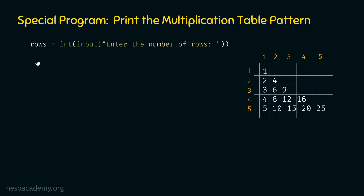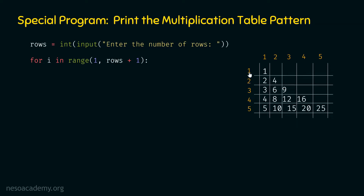We need nested for loops to print this pattern correctly, as we learned in our last lecture on the right triangle number pattern. The outer for loop represents the rows and the inner for loop represents the columns. The outer for loop looks like: for i in range(1, rows + 1). We provide rows plus one as the second argument to range because if rows is five, we want values one through five.